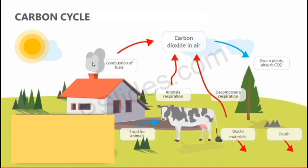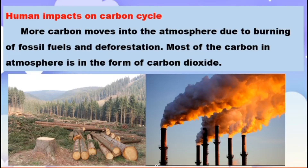Carbon dioxide comes out as smoke from industries. Human impacts on the carbon cycle disturb this natural process. The carbon cycle naturally moves from one stage to another: from the atmosphere to plants, from plants to herbivores, from herbivores to omnivores, from carnivores to decomposition, and after decomposition it settles into the soil.